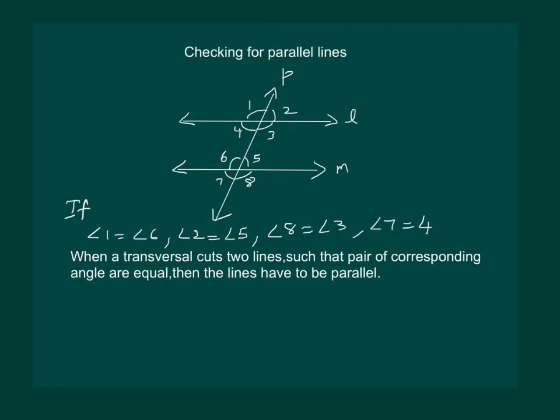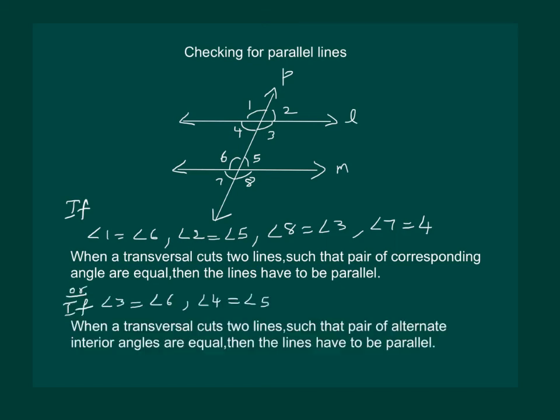For instance we can measure the alternate interior angles and then if they come out to be equal then again we can say when a transversal cuts 2 lines such that pair of alternate interior angles are equal then the lines are parallel.